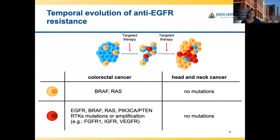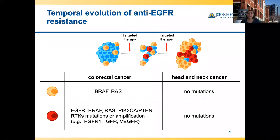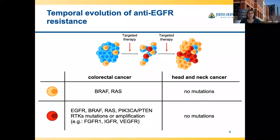I'm going to focus on anti-EGFR resistance. EGFR is commonly targeted in colorectal and head and neck cancers, where it's FDA approved. In colorectal cancer, the mutational landscape associated with resistance is well known — mutations in BRAF and RAS as intrinsic resistance mechanisms. In head and neck cancer, this has not been the case; there hasn't been a clear mutational progression associated with resistance. We hypothesize you really do need a dynamic approach to understanding this.